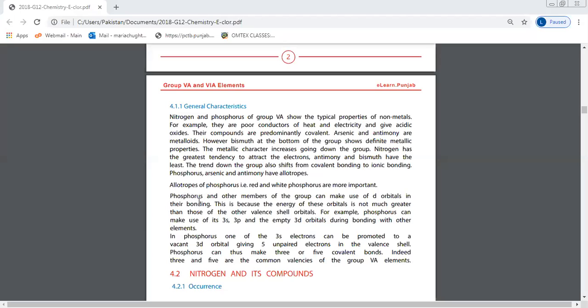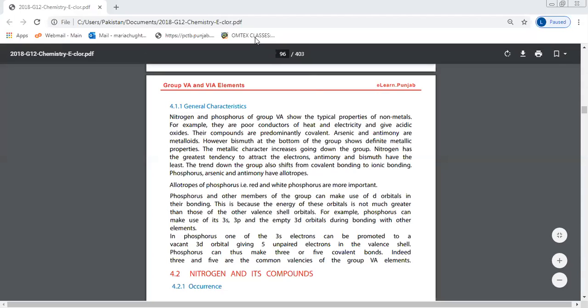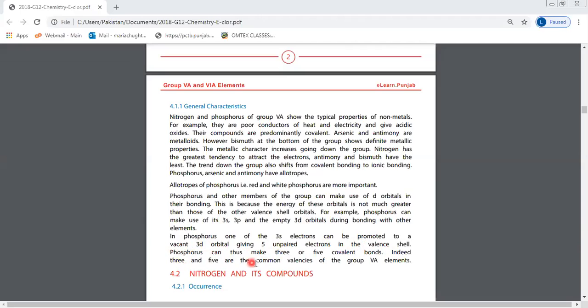Phosphorus and other members of the group can make use of d-orbitals in their valence shell. The energy difference is not much. For example, phosphorus can use its 3s, 3p, and empty 3d orbitals during bonding. One of the 3s electrons can be promoted to a vacant 3d orbital, giving 5 unpaired electrons in the valence shell. Phosphorus can thus make 3 or 5 covalent bonds—3 and 5 are the common valences of Group 5A elements.